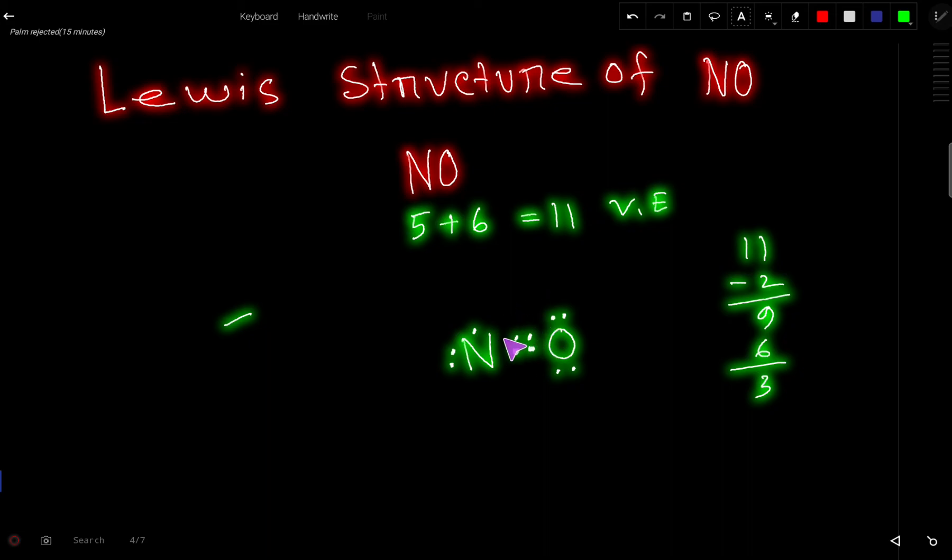That is why this is the Lewis dot structure of NO. You can express this structure like this. You can express this bond pair as a dash. Then you have to place the lone pairs. So this is the Lewis dot structure of NO.